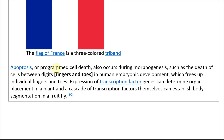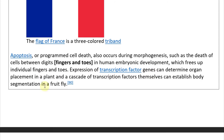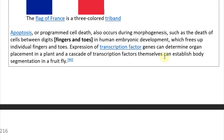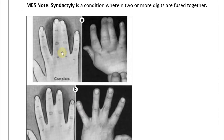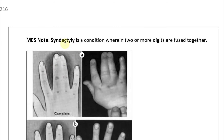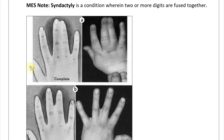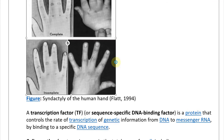Apoptosis — programmed cell death — also occurs during morphogenesis, such as the death of cells between digits like fingers and toes in human embryonic development, which frees up individual fingers and toes. Without this, you'd have syndactyly — a condition wherein two or more digits are fused together.